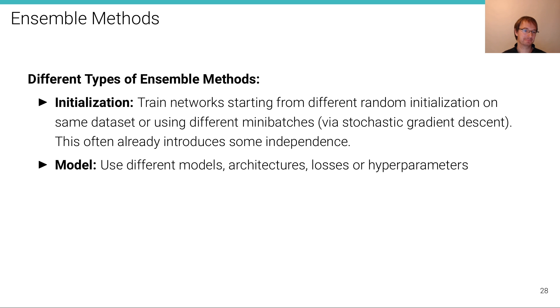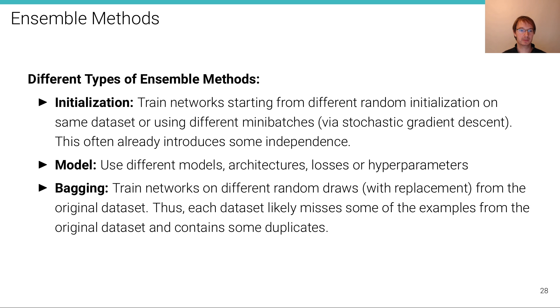The second idea is to use different models simply. So we can have slightly different model architectures. We can use more layers or less layers or different number of hidden units. We can use slightly different loss functions or hyper parameters, like different alpha values for the perimeter penalties. And then finally, we have bagging.